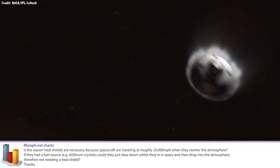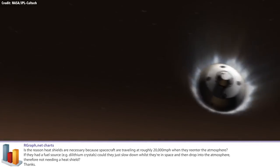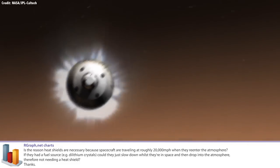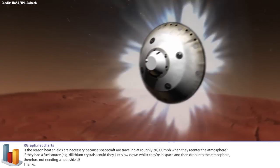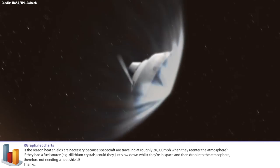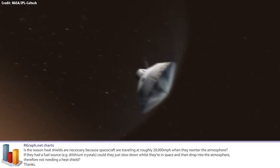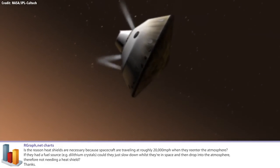Our graph net charts asks: Is the reason heat shields are necessary because spacecraft are traveling at roughly 20,000 miles per hour when they re-enter the atmosphere? If they had a fuel source, for example dilithium crystals, could they just slow down while they're in space and drop into the atmosphere, therefore not needing a heat shield?